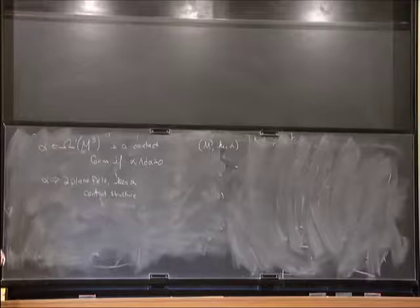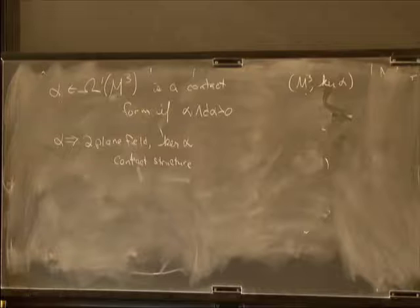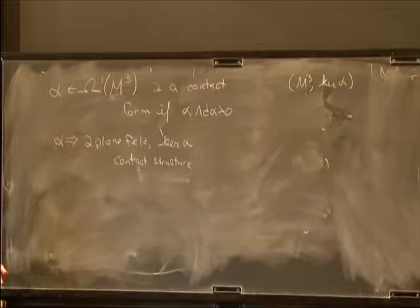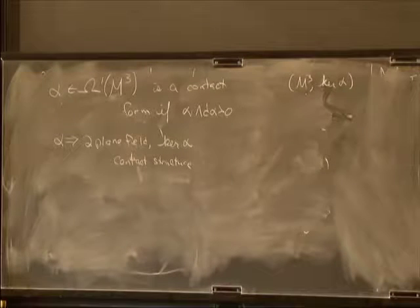One of the things that's nice about contact geometry is it has a lot of connections to other fields. You can think of it as an odd-dimensional cousin to symplectic geometry, which is an even-dimensional theory. There are lots of connections to symplectic geometry.